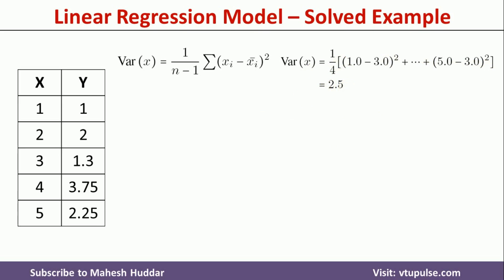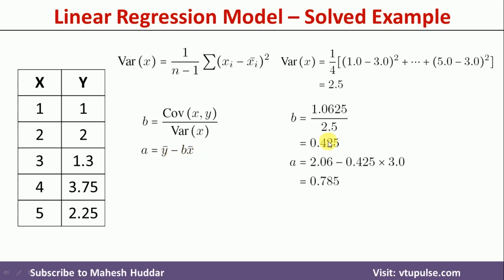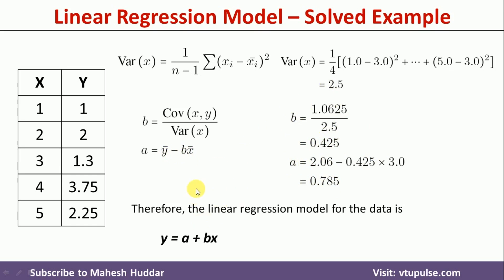Once we find the mean, variance, and covariance, we can calculate the values of a and b: b equals covariance of x,y divided by variance of x, and a equals mean of y minus b times mean of x. Putting in those values, we get b equal to 0.425 and a equal to 0.785. So the regression model y equals a plus bx becomes: y equals 0.785 plus 0.425x. Once you have this regression equation, if you know the value of x, you put it in and get the predicted value of y.